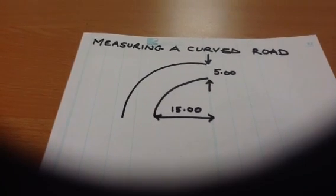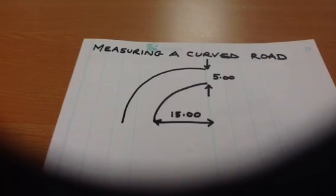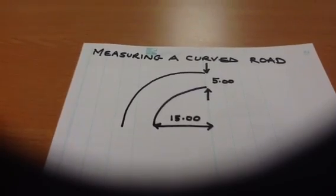If we look at our curved road, we can see that the width of the road is 5 metres. We now need to consider the length.